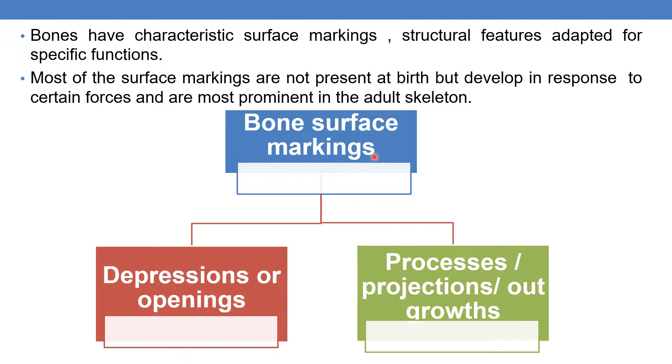There are mainly two types of bone surface markings. The first type is depressions or openings, and the second type is projections, processes, or outgrowths.